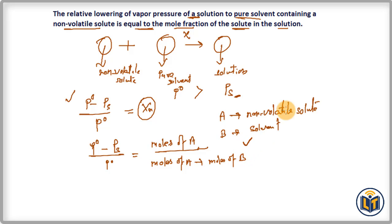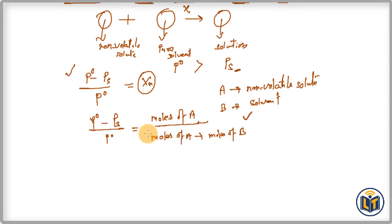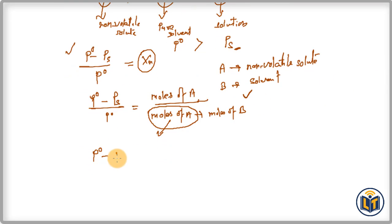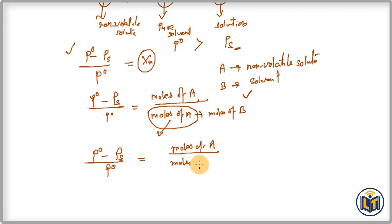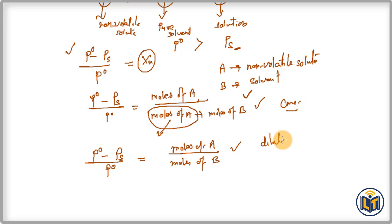In the case of a dilute solution, we assume the amount of solute is very small, so moles of solute become negligible. In that case the formula becomes: (P naught minus PS) upon P naught equals moles of non-volatile solute upon moles of solvent B. The previous formula is used for concentrated solutions, and this formula is used for dilute solutions.